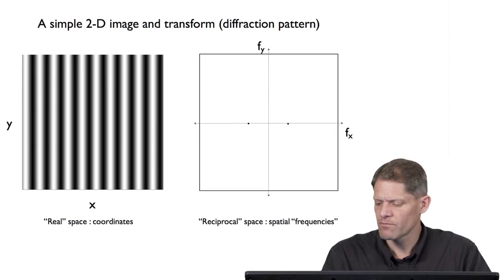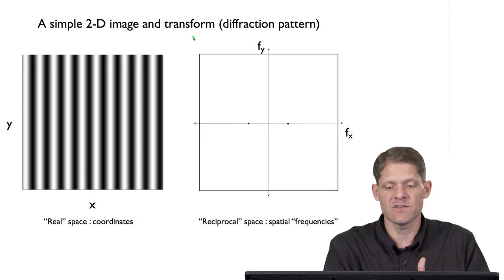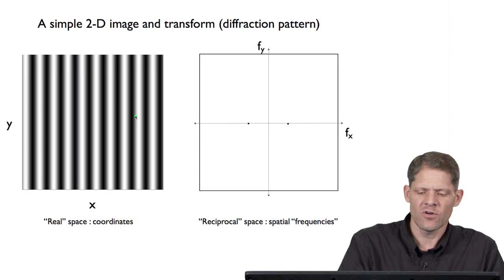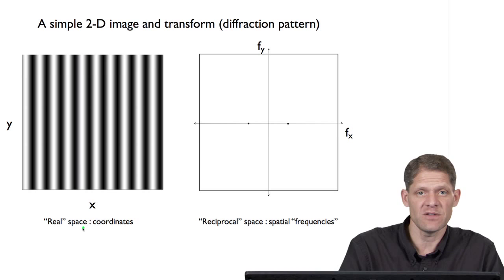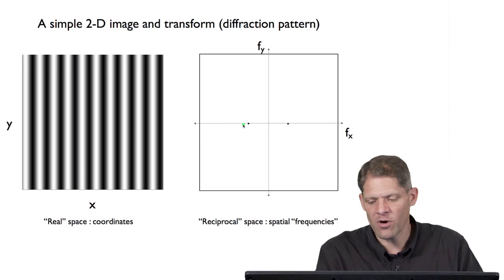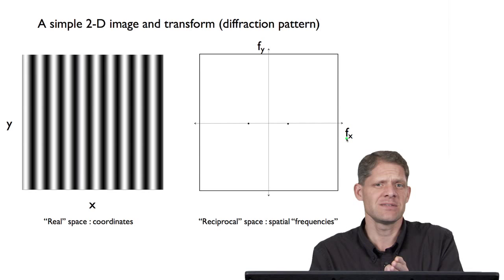This is a simple two-dimensional image and its transform. We'll learn later that the transform of an image is the same as its diffraction pattern. Here is a very simple 2D image — you'll recognize it's simply one sine wave oscillating back and forth as it crosses the box. The coordinates are x and y, and this is real space — the actual image. If we record its Fourier transform, the axis in the Fourier transform is spatial frequency in the x direction, indexed with Miller index h, and the vertical axis is spatial frequency in the y direction, indexed with Miller index k.